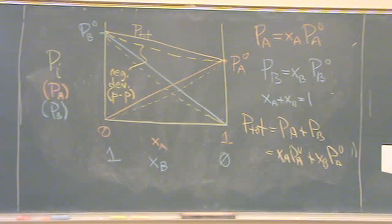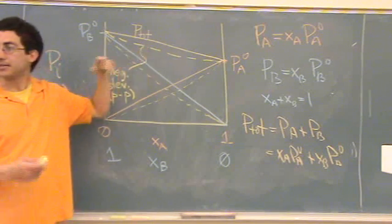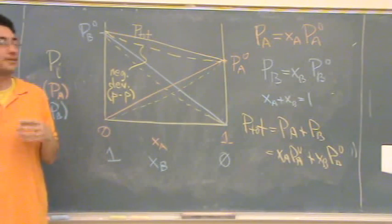So, both A and B are polar. You'd expect a little negative deviation, a smaller pressure than expected, because they're both attracted to each other and they don't want to go off into solution, or out of solution.